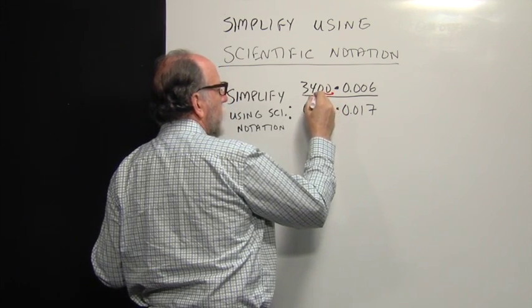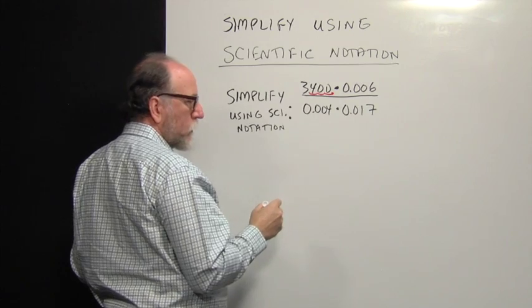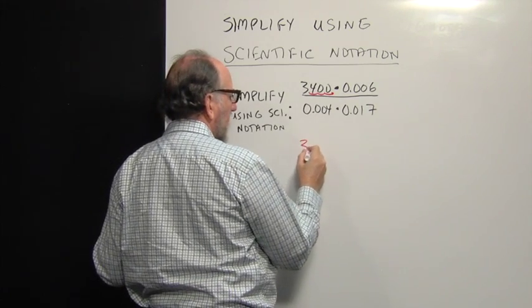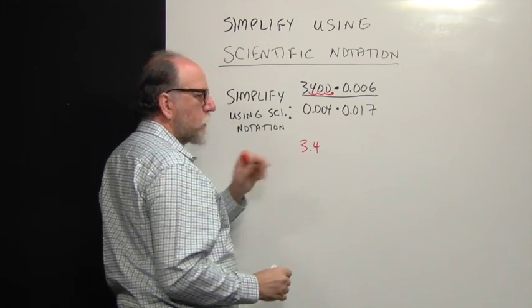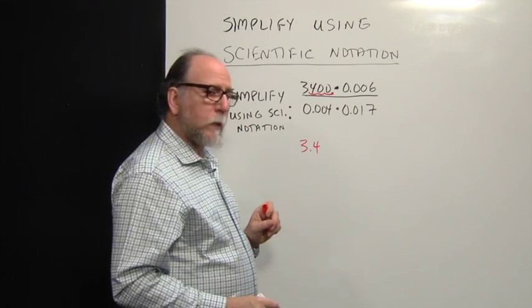So I would move it one, two, three places to the left. That makes this number smaller, 3.4. Remember, this number needs to be between 1 and 10.